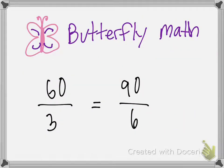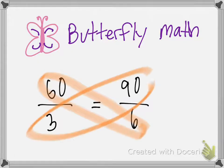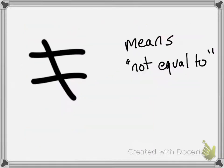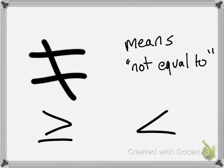Same thing here — we do our butterfly math and we get 360 and 270, so these are not equal. This sign right here means 'not equal to' — you've been introduced to that sign. This one means 'greater than or equal to,' and this one means 'less than or equal to.'